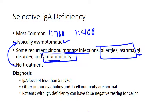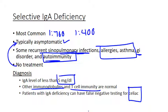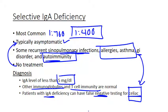Diagnosis is straightforward: you've got low IgA, and everything else is essentially normal — other immunoglobulins present, T-cells functioning. One thing to note: if a patient is 90% sure they have celiac but the celiac test is negative, you might check their IgA, because patients with IgA deficiency often have increased GI disorder issues that can mimic celiac disease. They believe they're celiac, you check for celiac, it's negative, but it could actually be IgA deficiency — which is pretty common.